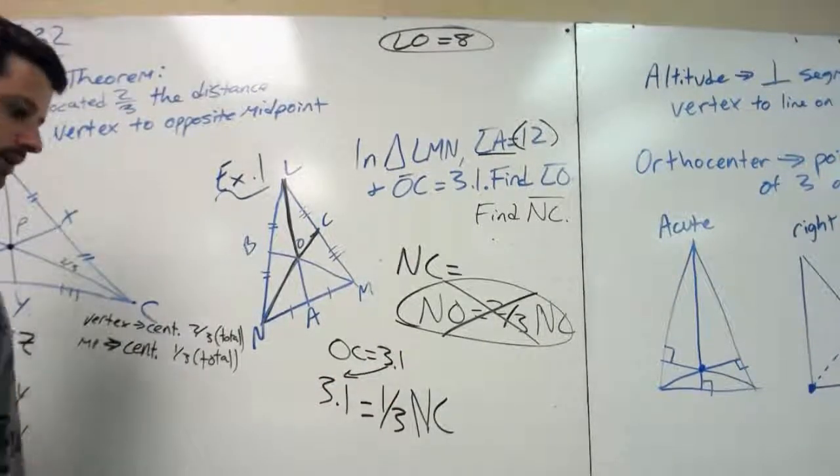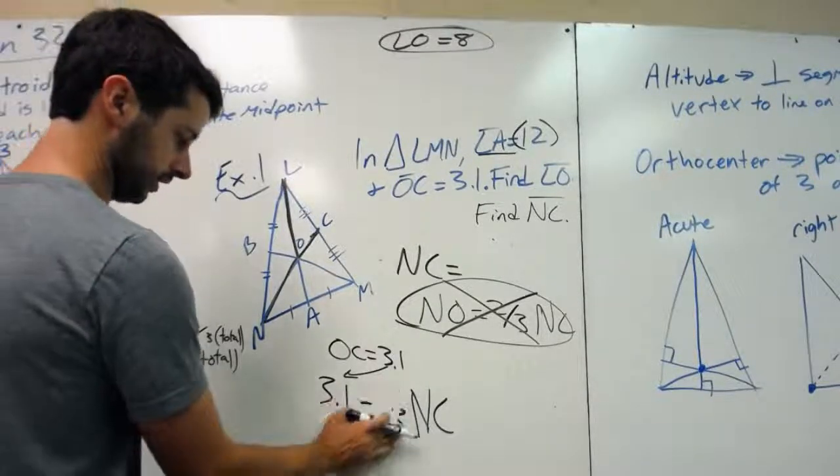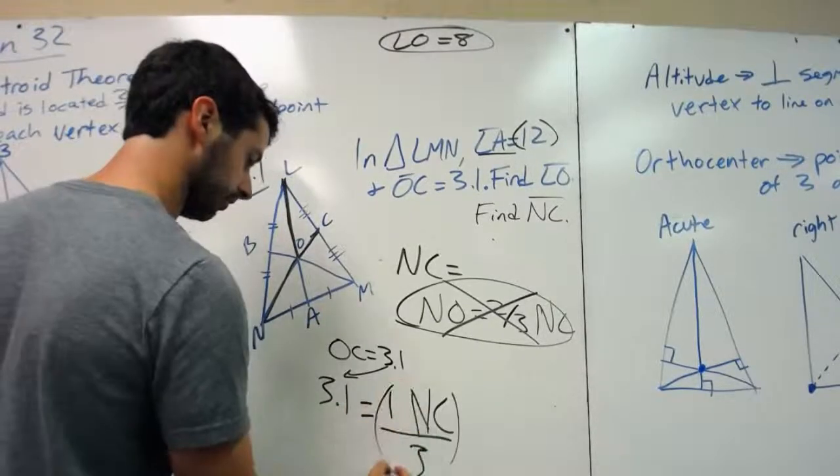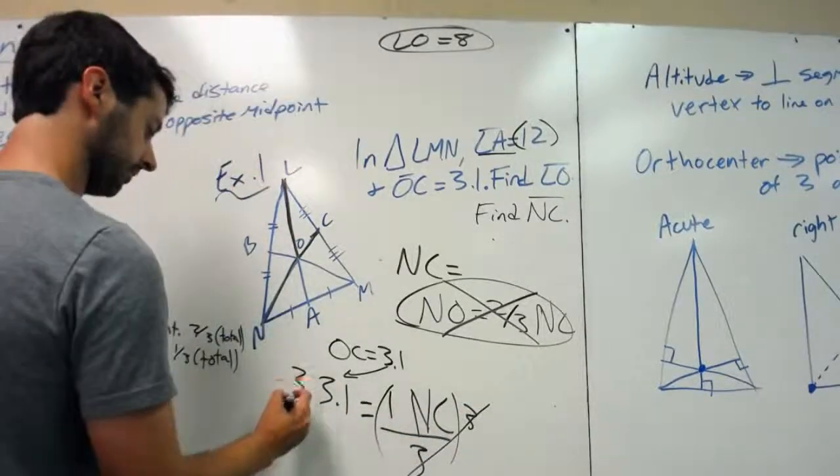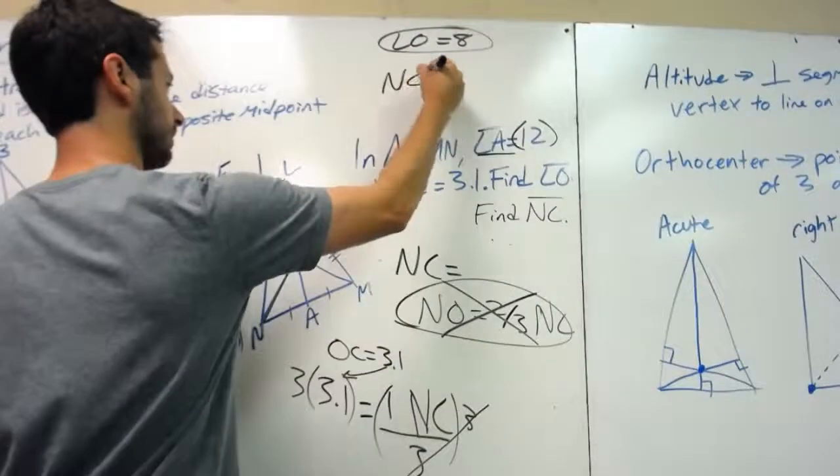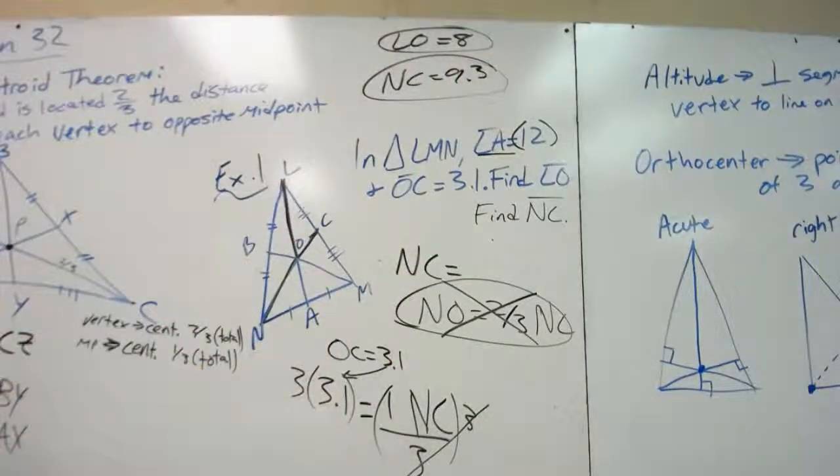Then from here, to get rid of one-third, we would multiply by three, multiplication property, and then when we multiply, we would get NC equals 9.3. And that is how you do the centroid theorem.